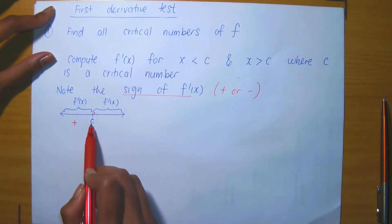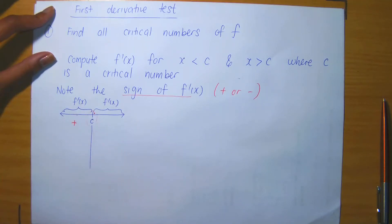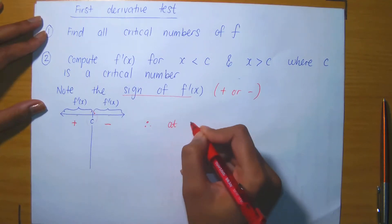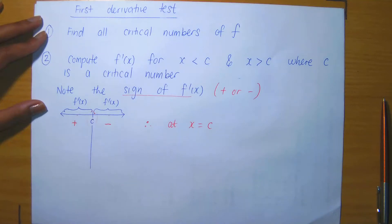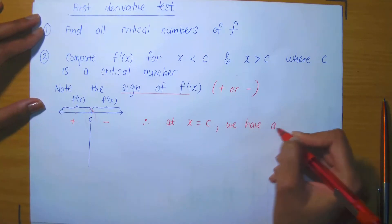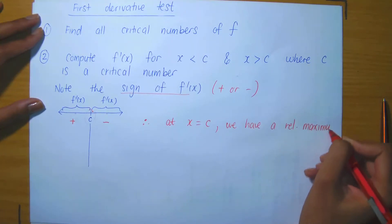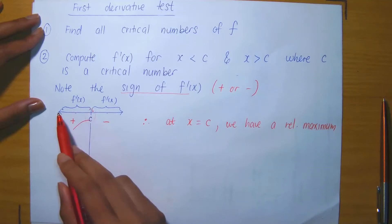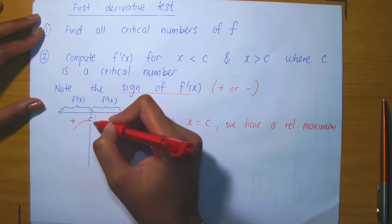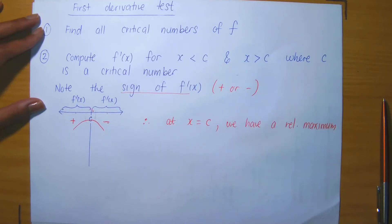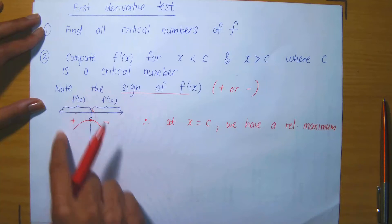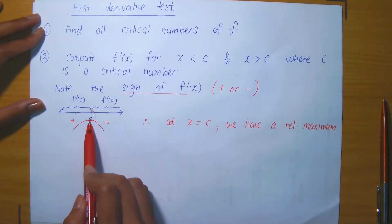Suppose we obtained a positive answer when we took a value less than c and plugged it into the derivative, and a negative answer when we took a value bigger than c. In this case, at x equals c — that critical number — we have a relative maximum. The positive sign implies the function is increasing on the left-hand side of c, and the negative sign implies it is decreasing on the right-hand side of c. So an increase followed by a decrease produces a peak, giving a relative maximum.